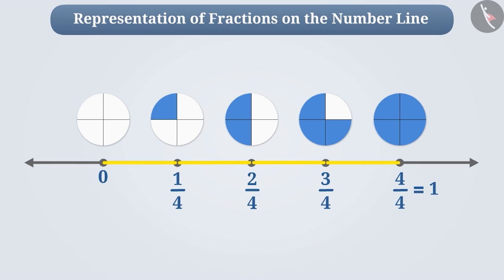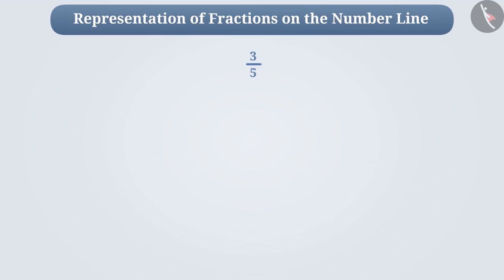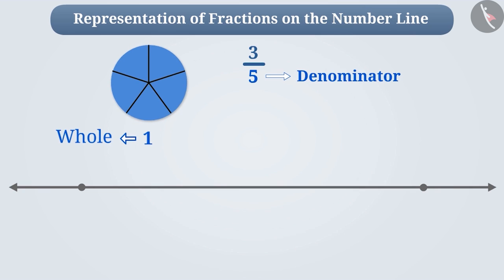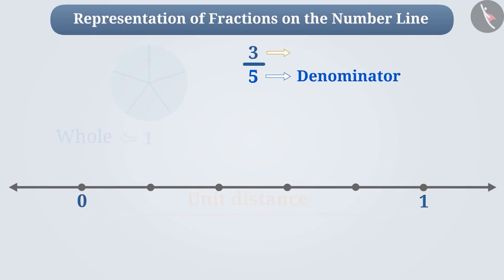In this way, we can represent any fraction on the number line. Suppose we have to represent three by five on the number line. In order to do this, first we will make a number line. Since the denominator of this fraction is five, it tells us that a whole is divided into five equal parts. So we will divide the unit distance into five equal parts.